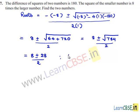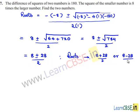Therefore, the roots can be: 8 plus 28 divided by 2, which is 36 divided by 2 equals 18; or 8 minus 28 divided by 2, which is minus 20 divided by 2 equals minus 10.